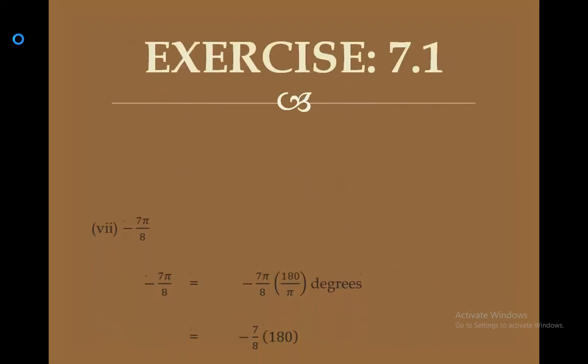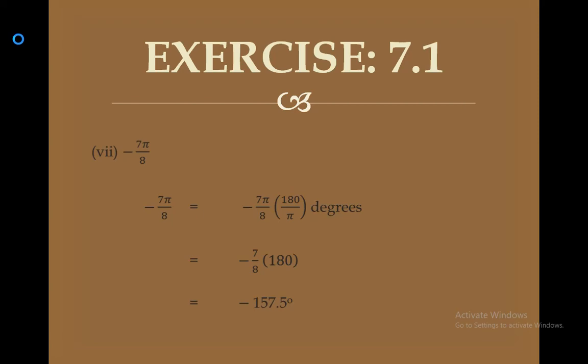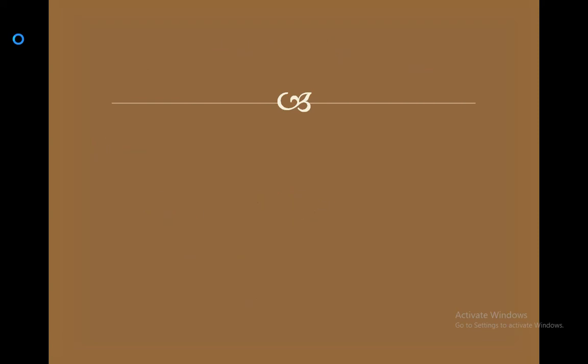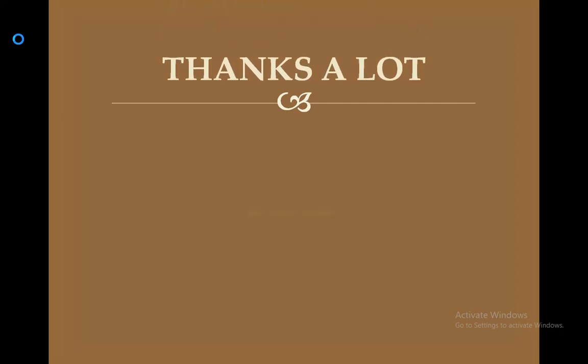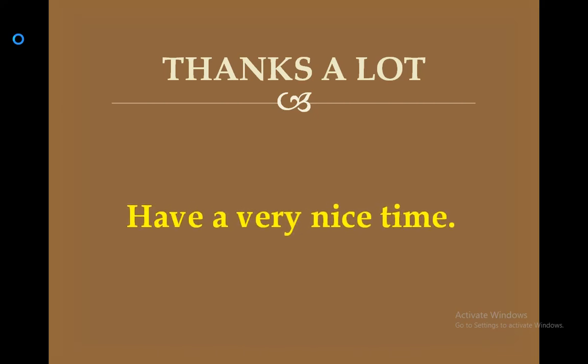Part 7 is minus 7π/8. Multiply by 180/π — π cancels, then simplify 180 over 8 using the calculator. The result is minus 157.5 degrees. You just need to apply the basic rule. That's the end of exercise 7.1. Thanks a lot, have a very nice time. Allah Hafiz.